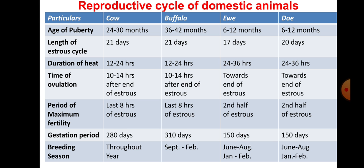Gestation period: sheep 150 days and goat 150 days - similar to humans who have nine months and nine days. Breeding season: cow breeds throughout the year; buffalo from September to February and June to August; sheep from January to June; goat from August to January or February. This is the most important reproductive cycle data for domestic animals.